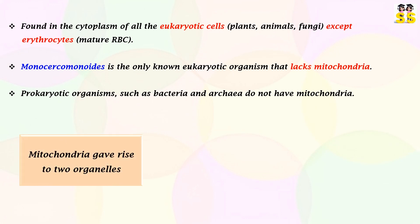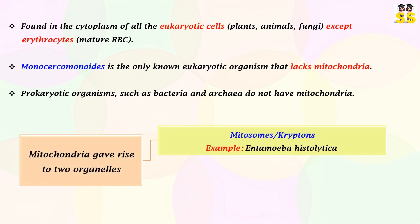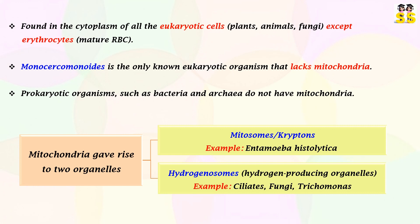The two mitochondria-derived organelles comprise mitosomes or kryptons — example: Entamoeba histolytica — and hydrogenosomes, examples of which include ciliates, fungi, and trichomonas.